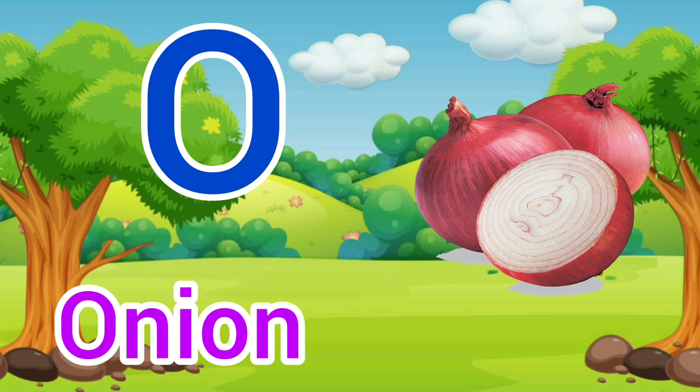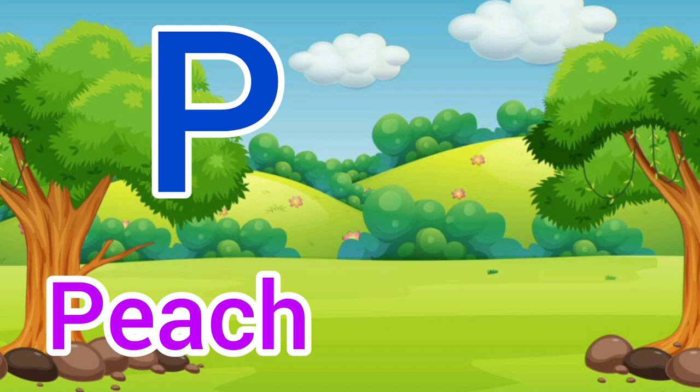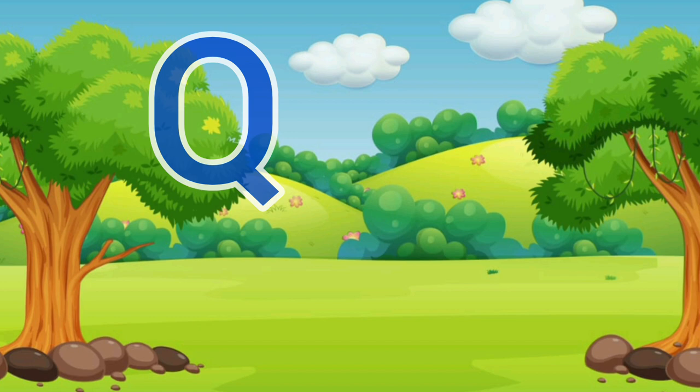P — P for peach. Peach means aadu. Q — Q for queen. Queen means rani.